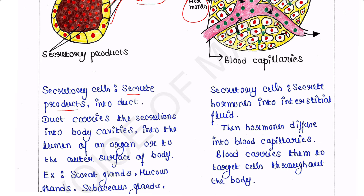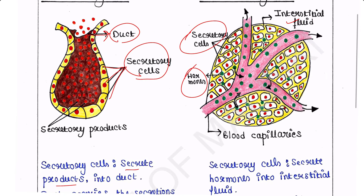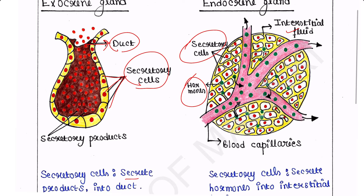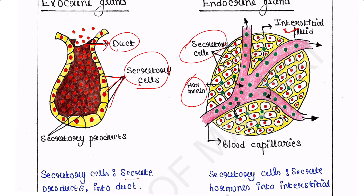Blood carries the hormones to target cells throughout the body. Here we can see that from the interstitial fluid, these hormones are getting diffused into the blood capillaries, and the blood capillaries will deliver those hormones to different parts of our body.